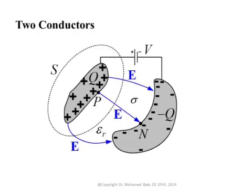We have a situation where we have two conductors: the first conductor kept at positive potential, and the second at negative potential. A battery connects both, maintaining a voltage difference V between them. In the case of a coaxial cable, you have the inner conductor and the outer conductor. The desired current flows out from the page on one side and into the page on the other.